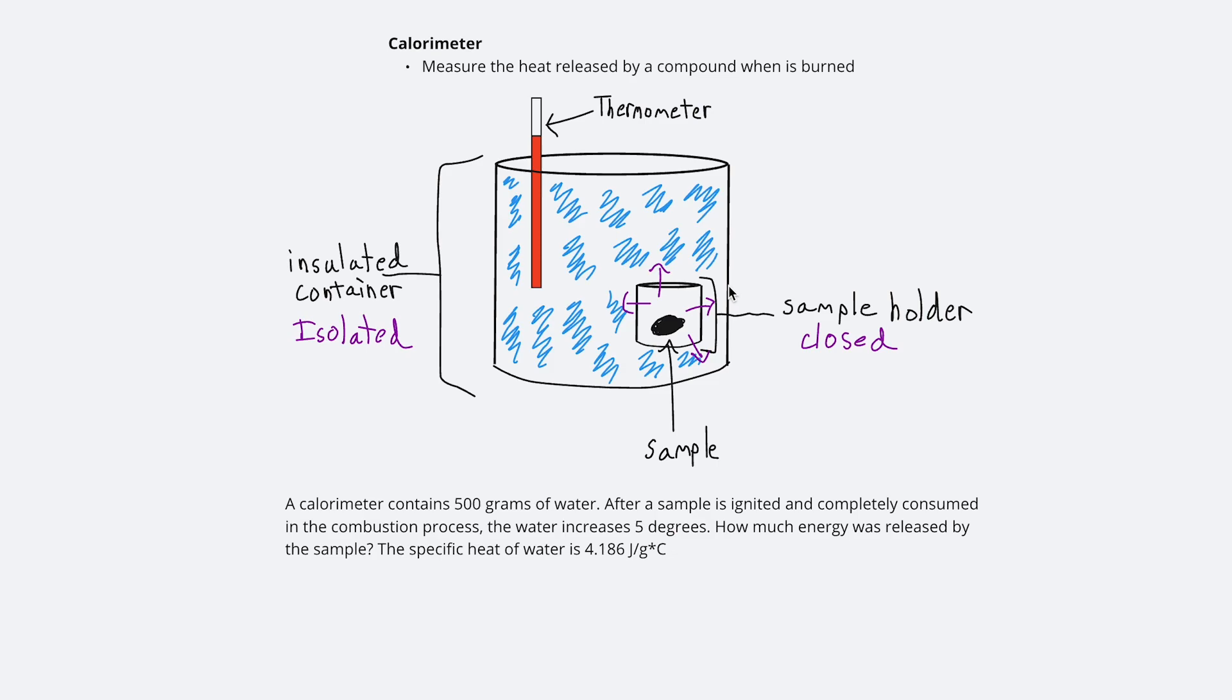The water that's surrounding the sample holder will start to absorb all of the energy that's being released. A lot of times there will even be stirrers inside of the insulated container. That way, as the water gets heated up around the sample holder, it'll get spread out to the rest of the container to keep that heat exchange as efficient as possible. As that water heats up, it is not exchanging any energy with its surroundings. So all of the energy being absorbed by the water is being contained within that isolated container.